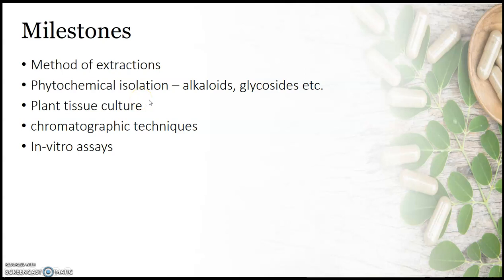Another development in pharmacognosy was the development of methods of plant tissue culture — developing a complete plant in the laboratory from any part of the mother plant. This meant farmers and cultivators need not depend on climatic constraints. Plant tissue culture is a milestone turning point in the development of pharmacognosy. Later, chromatographic techniques helped identify different kinds of phytochemicals present in plants, and finally in vitro assays were developed.